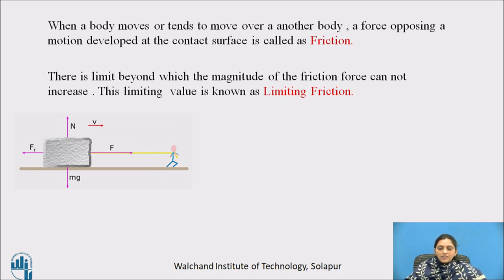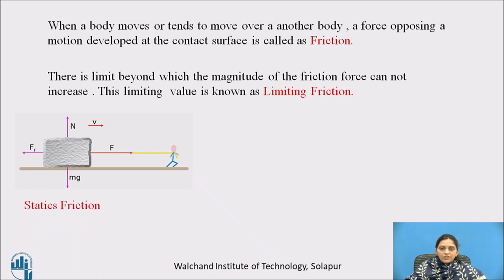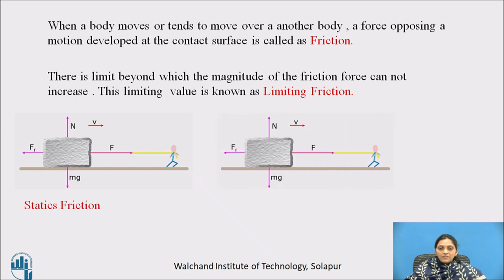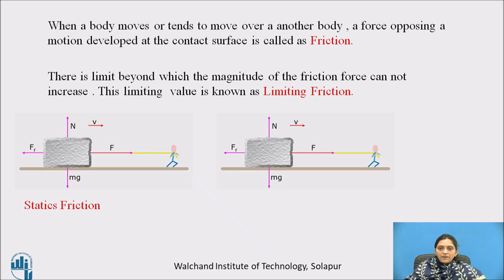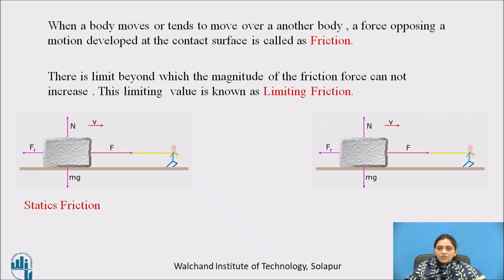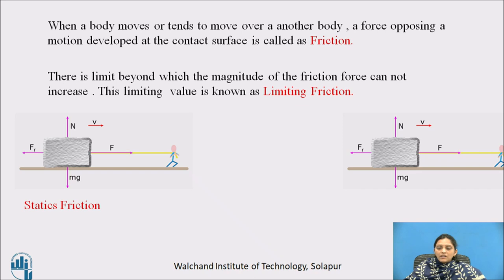In one case, a person tries to pull the block with force F but it does not move — it remains at rest. This is a case of static friction. In another case, the block moves in the direction of force F, and in that case the friction is called dynamic friction.